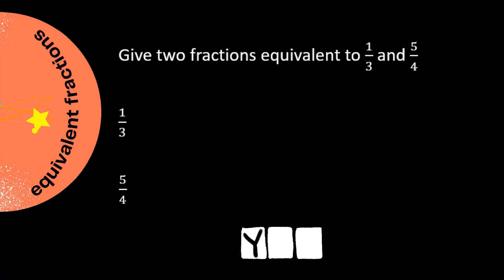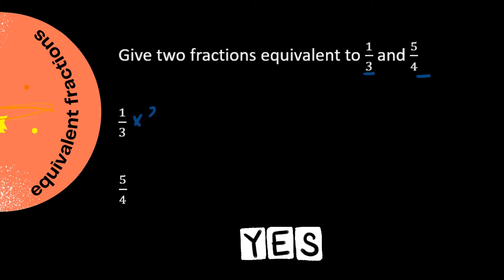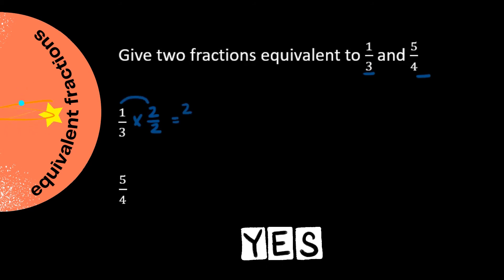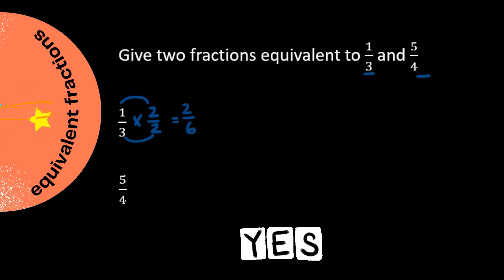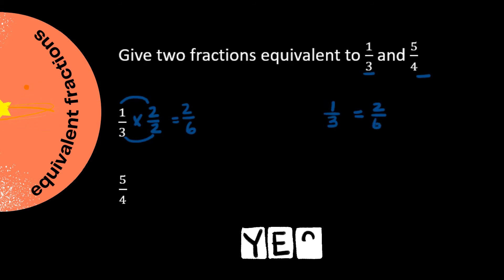The question reads: give two fractions equivalent to one over three and five over four. If we multiply one over three by two over two, we get one times two which equals two, and three times two which equals six. We can now say that one over three is equal to two over six, and that they are equivalent fractions.